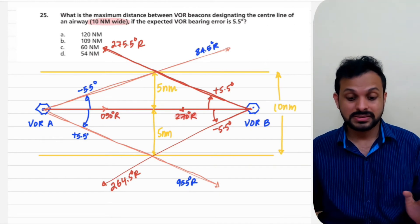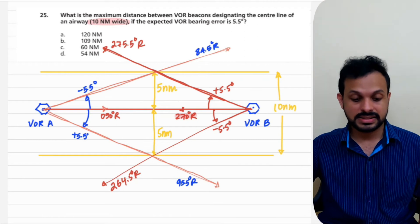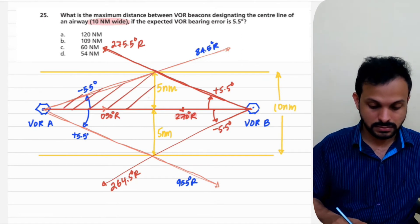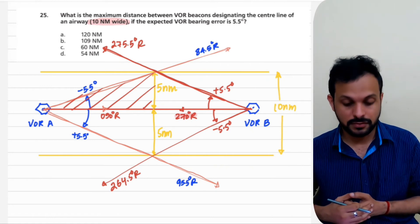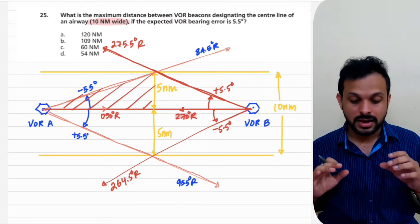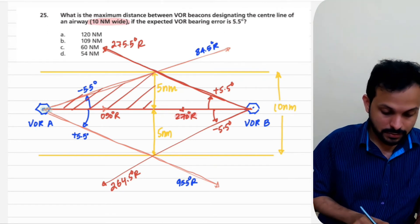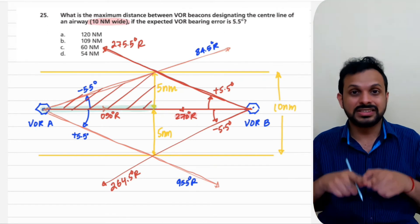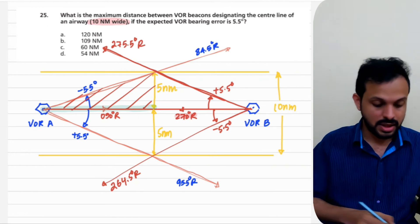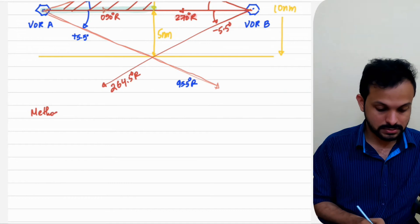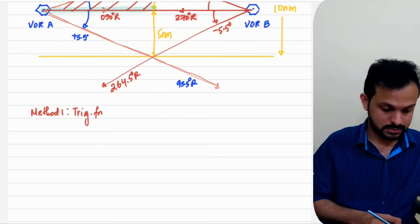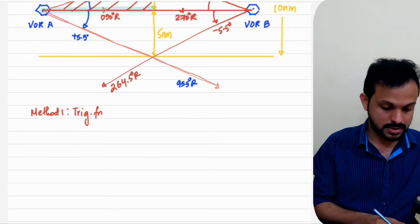We're asked to find out what should be the maximum distance between the VOR beacons designating the center line of the airway. We're looking at a small right-angle triangle. We know the opposite side is 5 nautical miles for a standard 10 nautical mile wide airway, and the track angle is minus 5.5 degrees. If we can find the distance from the VOR to the boundary intersection and double it, that gives us the maximum permissible distance between the two VORs.